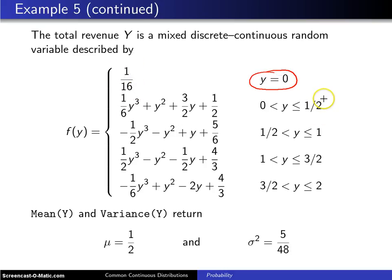And then everywhere else, it falls between zero and a half, a half and one, one and three-halves, three-halves and two. And this is a mixed continuous-discrete distribution that tells you how much revenue Barney will make.